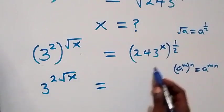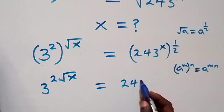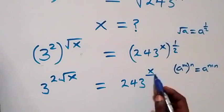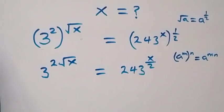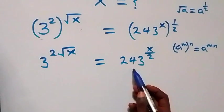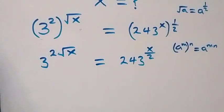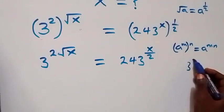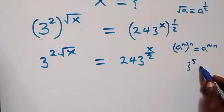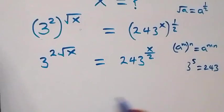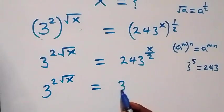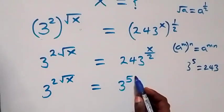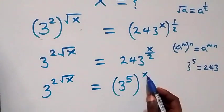On the right side, we now have 243 raised to power x over 2. We also express 243 as base 3: 3 raised to power 5, since 3 multiplied by itself five times gives 243. So we have 3 raised to power 2 root x equals 3 raised to power 5, then raised to power x over 2.